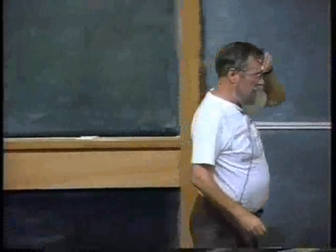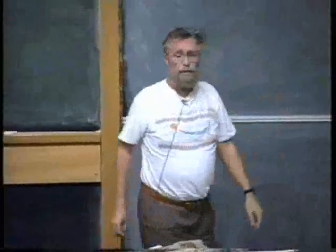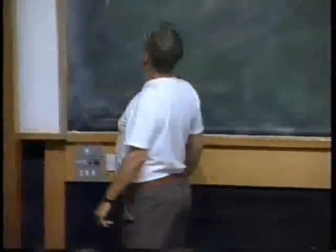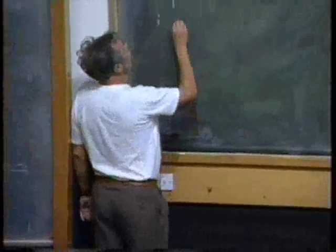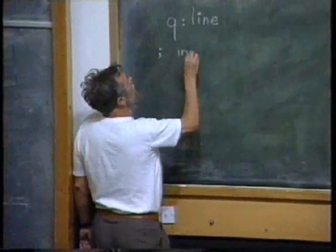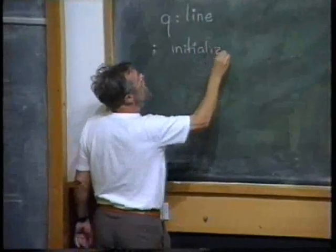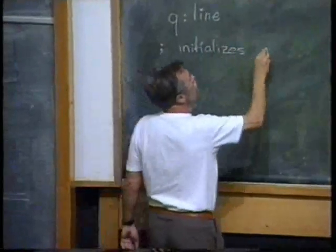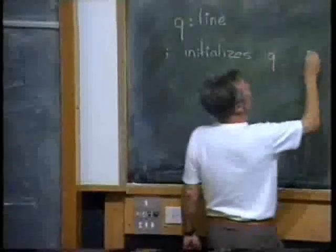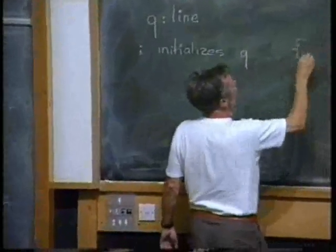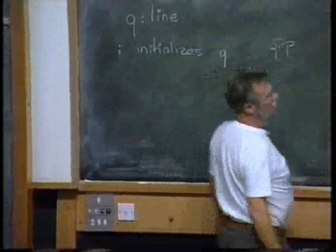Now, since lines are determined by two points, my proposal is that we initialize... that the program initializes q such that upon initialization, p holds.